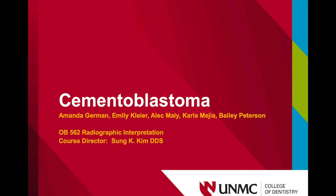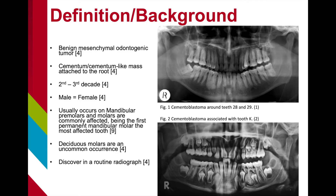Cementoblastoma is a rare benign mesenchymal odontogenic tumor that is defined by an excess growth of cementum or cementum-like tissues attached to the root of a tooth. These tumors are normally found in the second or third decade of life and do not appear to have a gender predilection.